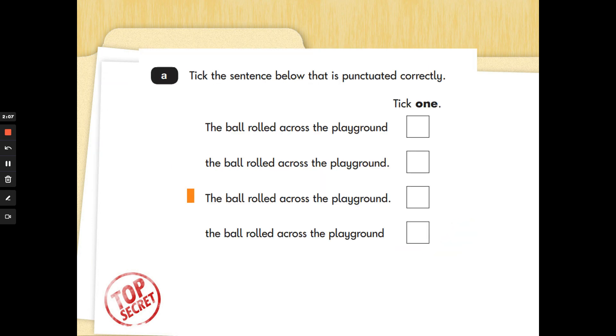Question A. Tick the sentence below that is punctuated correctly. So this is like the reading secret missions. You've got four choices. You've got to tick one. You only have to look for what a sentence needs. The spelling is exactly right in every word and all of them say the ball rolled across the playground. What does a sentence need to start with? That's right. A capital letter. So the top one does. The second one doesn't. The third one does. The last one doesn't.